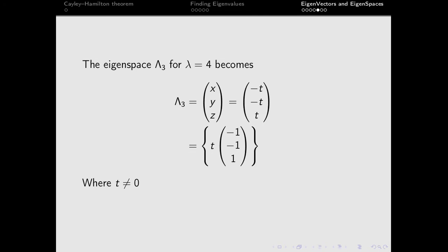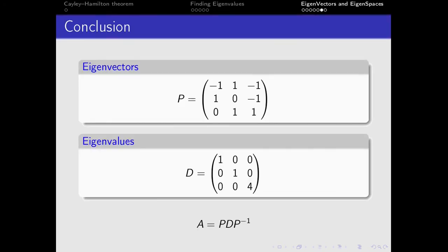If t equals negative 1, multiplying gives us 1, 1, minus 1. In conclusion, our first and second columns come from the first eigenspace and our third column from the eigenspace for lambda equal to 4. We write our eigenvalues in terms of a diagonal matrix. To recover our original matrix A, we compute P times the diagonal matrix times P inverse, and multiplying them together gives us back our original matrix A.